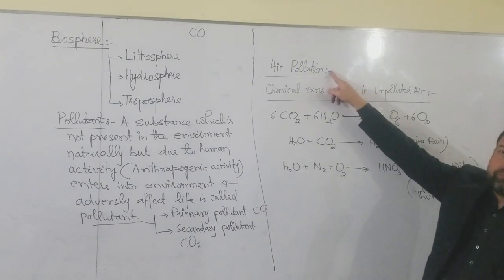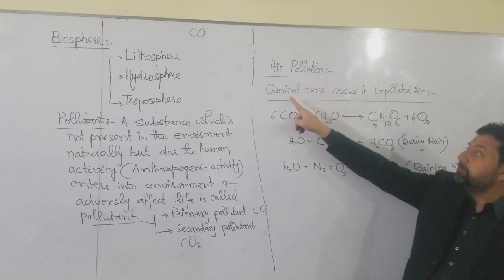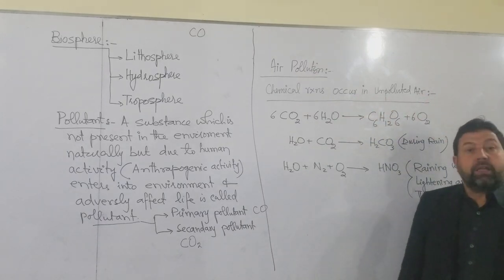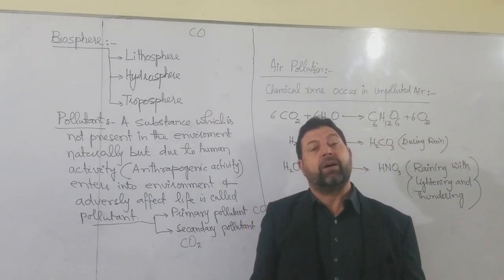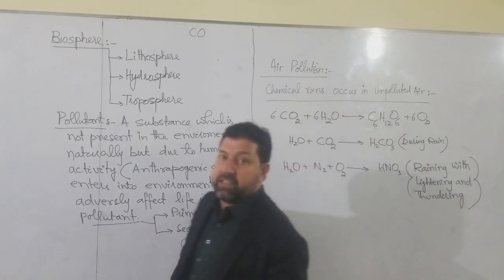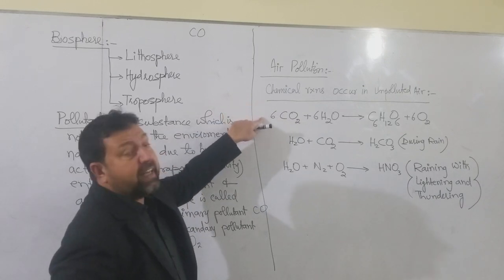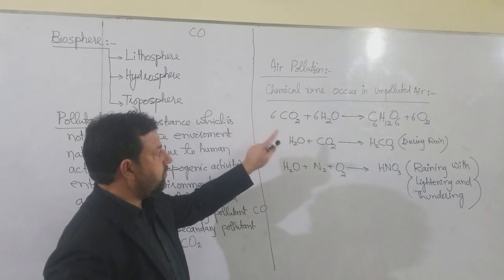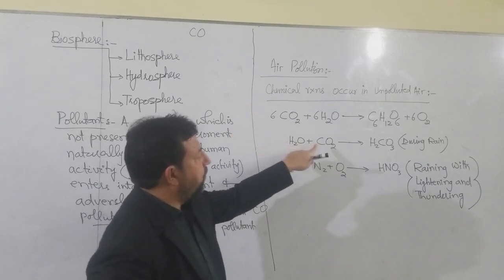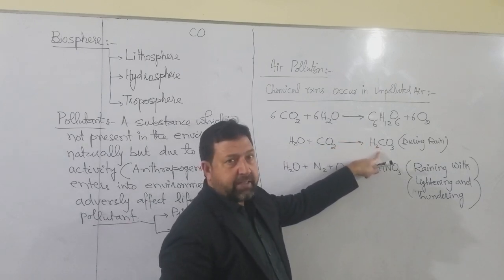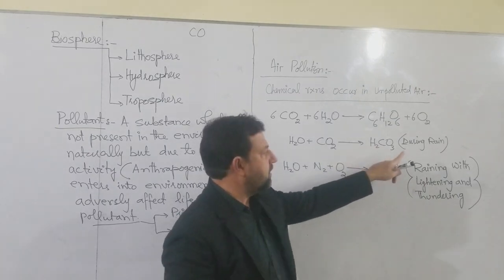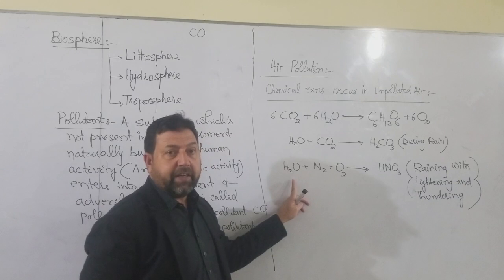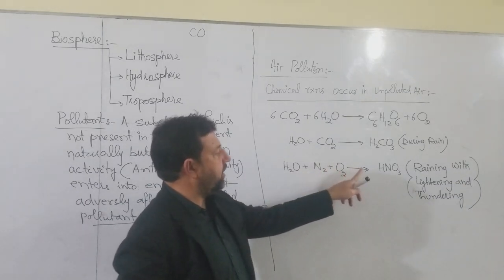Air Pollution discuss کرنے سے پہلے، unpolluted air میں کون سے chemical reactions ہوتے ہیں؟ پہلا reaction Photosynthesis ہے — یہ sunlight اور chlorophyll کی موجودگی میں ہوتا ہے۔ دوسرا reaction بارش کے وقت ہوتا ہے — جب lightning اور thundering ہو تو N₂ اور O₂ react کر کے HNO₃ بناتے ہیں۔